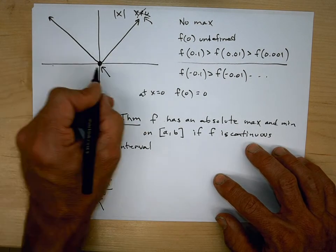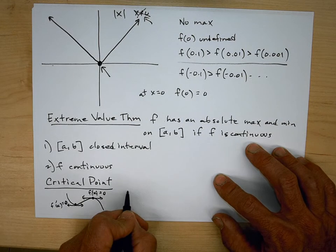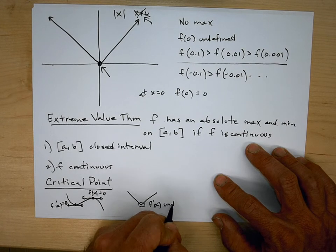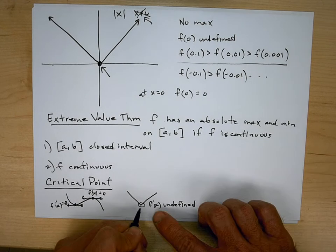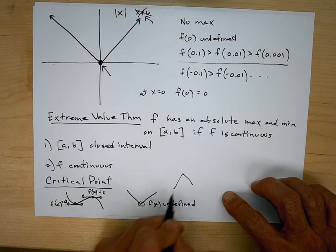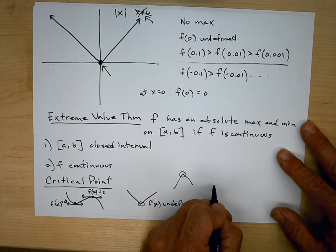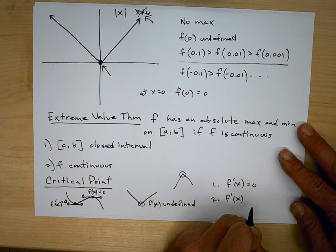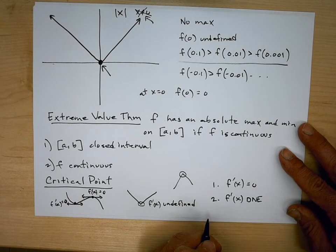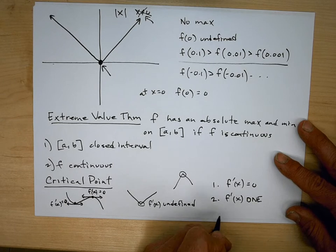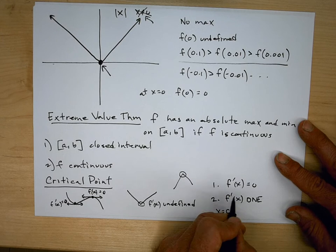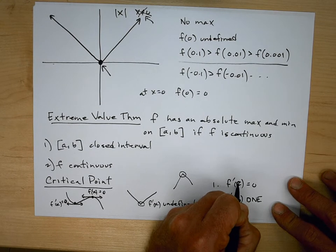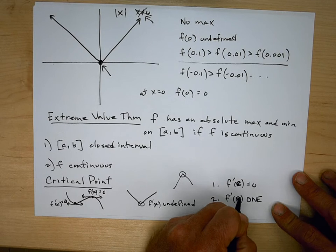We could also have something like the absolute value — maybe something like this. When we have a corner point, we know that f prime of x is undefined; it's not differentiable at that point. But that point could give us a min or a max. So the critical points, to summarize, are the points where the derivative is zero or where the derivative does not exist. We say that x equals c is a critical point if f prime of c equals zero or f prime of c does not exist.